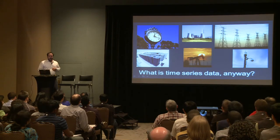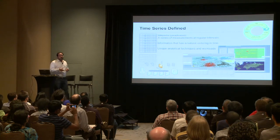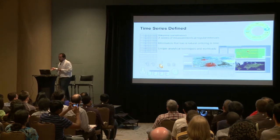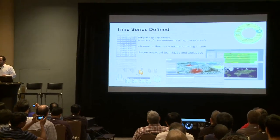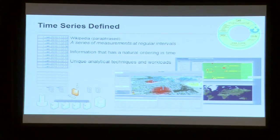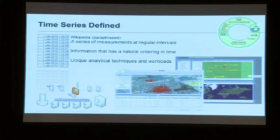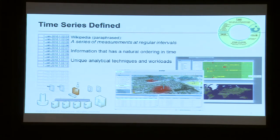So what is time series data? I'll take a slightly different definition than Jonathan did this morning. Essentially, it's a series of measurements at regular intervals — information that has a natural ordering in time. It gives us an index and a frame of reference across all time series data that shares a common clock. Since the longitude problem was solved and we decided that somewhere in Greenwich, England was where we wanted to measure time from, we've had this reference point to look across different series of data. It implies different kinds of analytical workloads and unique requirements that give clarity to the architecture and the kinds of tools we want to use.